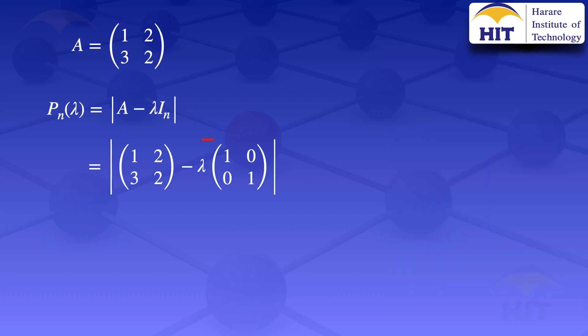If we look at that part there, where we have lambda multiplied by the identity matrix, we should recall that when we multiply a matrix by a scalar, we multiply every element of that matrix by that scalar. And if we evaluate that, we'll get 1, 2, 3, 2, minus lambda, 0, 0, lambda.